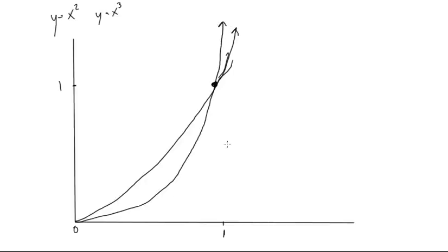So let's label these before we get lost. The top one here, the one that's on the top in our interval, that's going to be between 0 and 1, is y equals x squared. And the one on the bottom here is y equals x cubed.